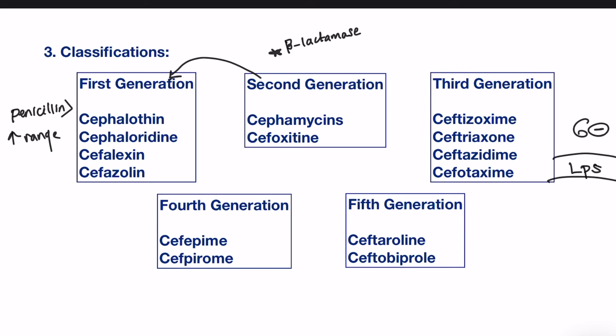The fourth generation includes cefepime and cefpirome. The unique features of these drugs are their good affinity for transpeptidase — the target enzyme, or the penicillin-binding protein — and their low affinity for a variety of beta-lactamases, the degrading enzymes.